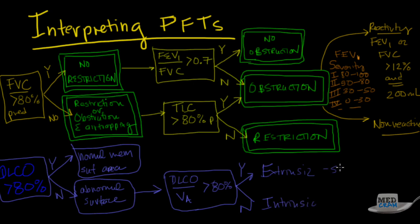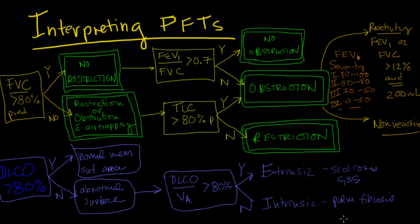So what are some examples? This would be like scoliosis or Guillain-Barre syndrome and this would be for instance pulmonary fibrosis or COPD.